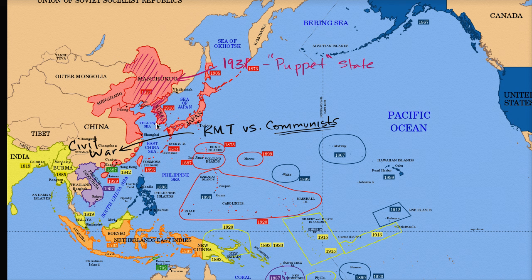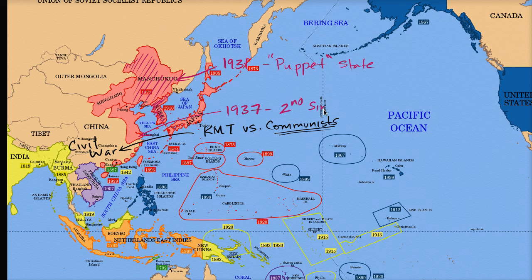Imperial Japan is taking advantage of this to take more and more control over parts of China. And that continues through the 30s until we get to 1937. In 1937, the Japanese used some pretexts — a kind of false flag, the Marco Polo Bridge incident — as justification to have an all-out war with China. So in 1937, you have all-out war. And this is often referred to as the Second Sino-Japanese War.